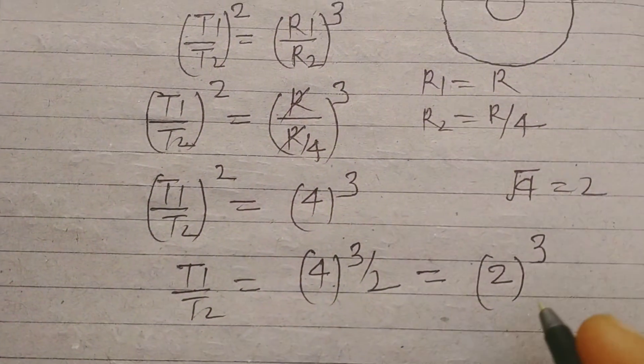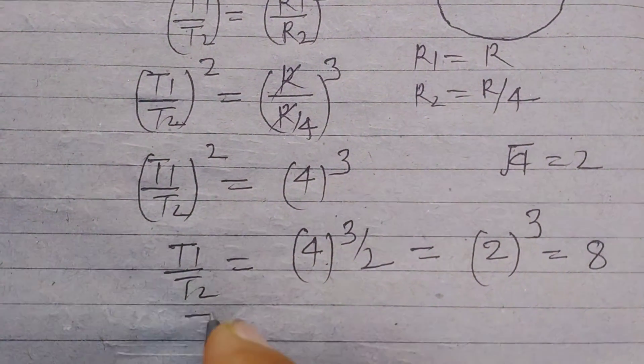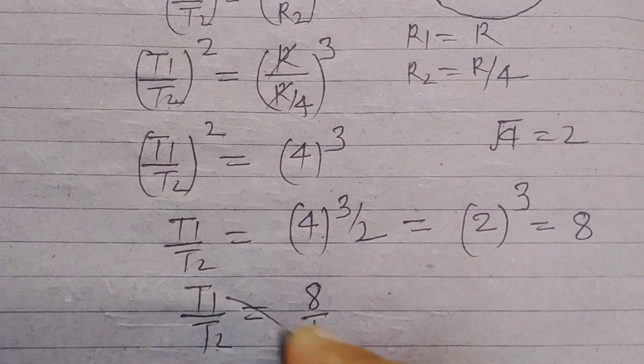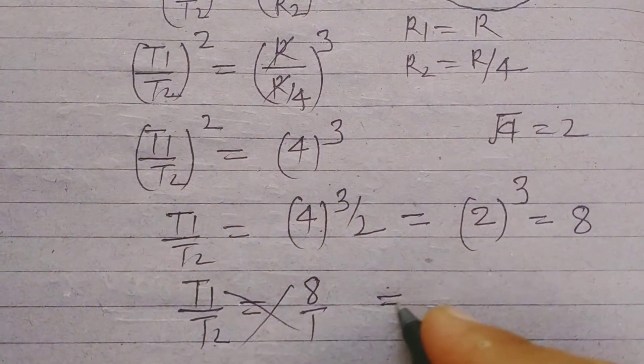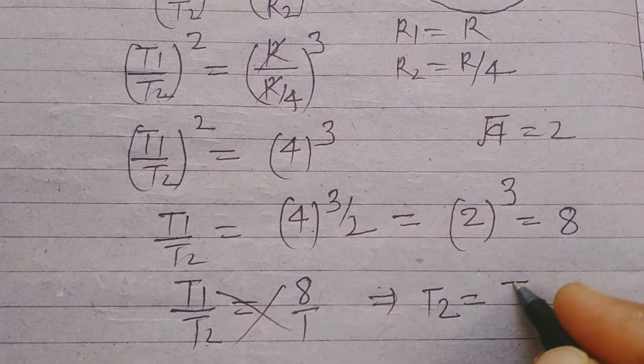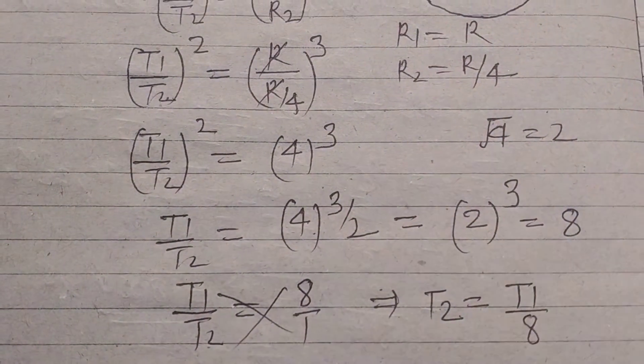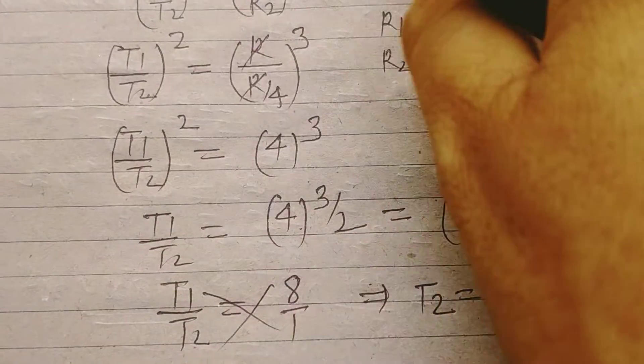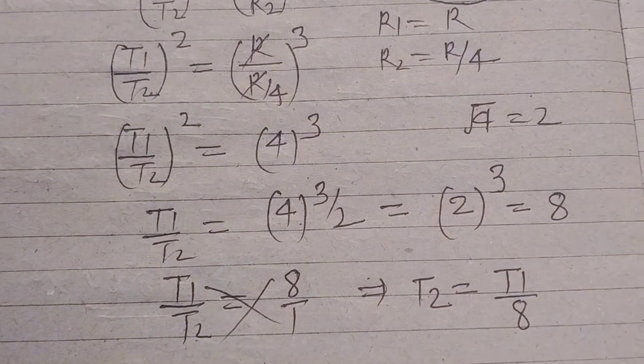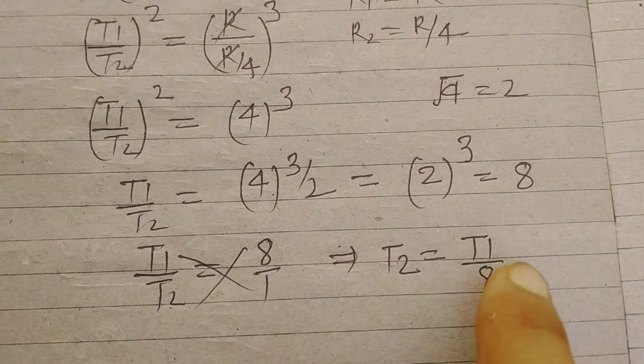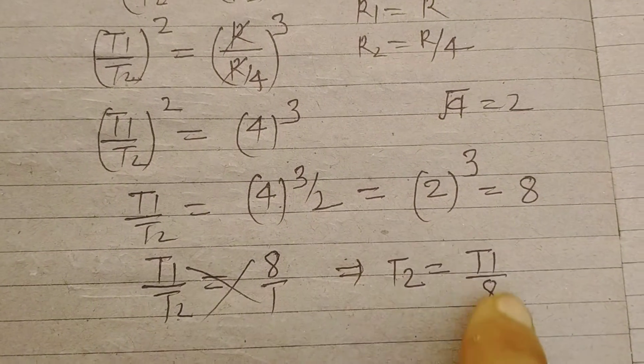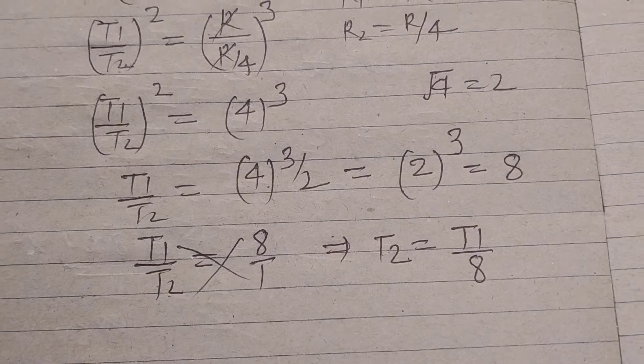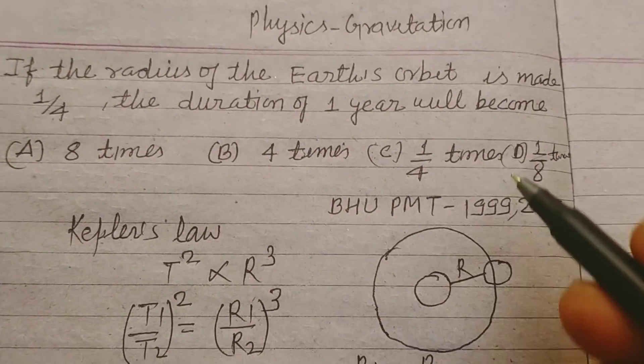So we put here and this is 8, so T1 upon T2 equal to 8/1. Therefore we got that T2 equal to T1/8. The time period after reducing, after making the radius of earth orbit 1/4, becomes 1/8 of the initial time period. So students, answer to this question is found in option D, 1/8 times.